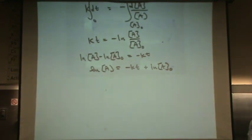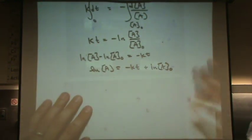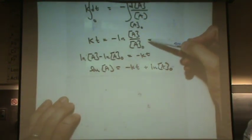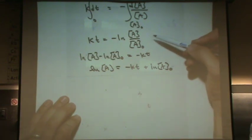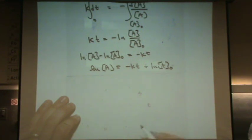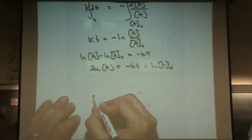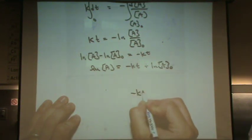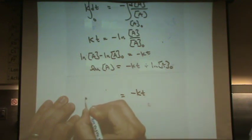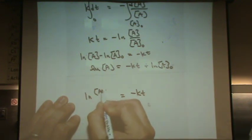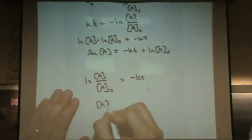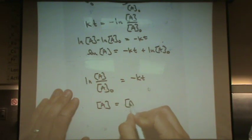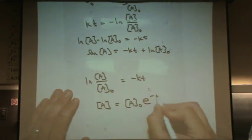And then one more form. Again, starting at the top one again. This time I'm going to solve for [A]. So I'm going to move the exponent to the other side. So let's put minus kt equals natural log of [A] over [A]₀. Solve for [A]. [A] equals [A]₀ e^(-kt).